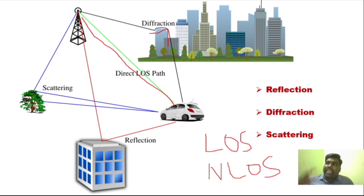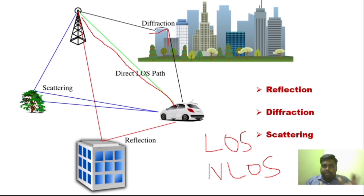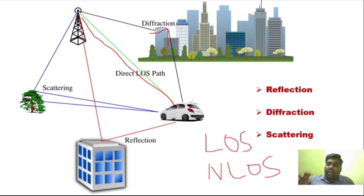Similarly, if there is any obstacle — buildings, any objects, or trees — any obstacle between the transmitter and the receiver, then that particular communication is called non-line of sight communication. Electromagnetic waves can still reach the receiver through these obstacles by the three aspects: reflection, diffraction, and scattering.